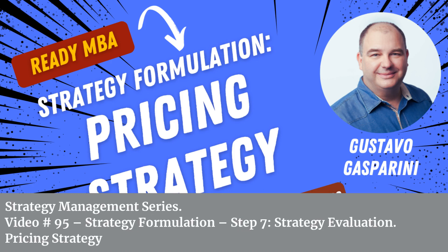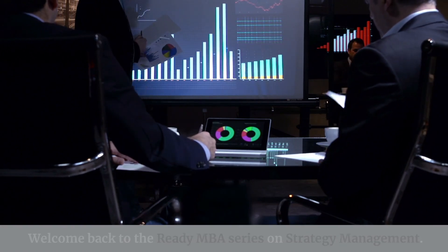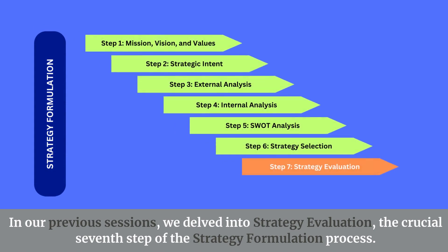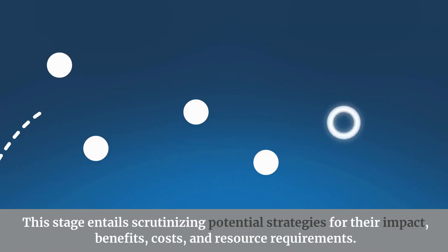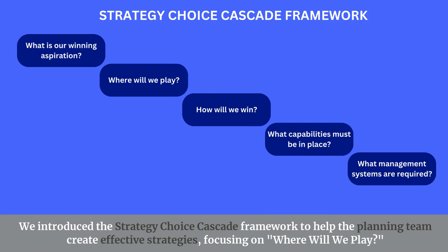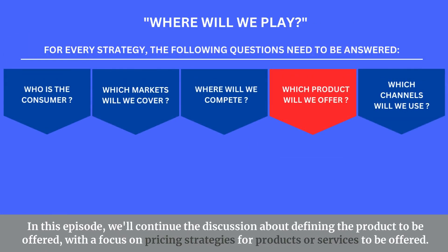Welcome back to the Ready MBA series on strategy management. This is video number 95, covering strategy formulation step 7: strategy evaluation — specifically pricing strategy. In our previous sessions we delved into strategy evaluation, the crucial seventh step of the strategy formulation process, introducing the strategy choice cascade framework focusing on where will we play. In this episode we'll continue the discussion about defining the product to be offered, with a focus on pricing strategies.